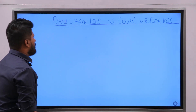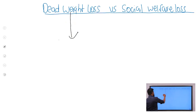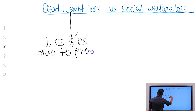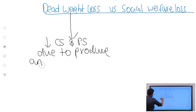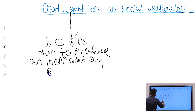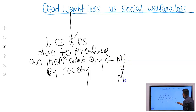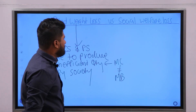Dead weight loss means the decrease in consumer surplus and producer surplus due to producing an inefficient quantity by the economy. At the inefficient quantity, marginal cost is not equal to marginal benefits. I will explain this through a diagram, then it will be very easy.